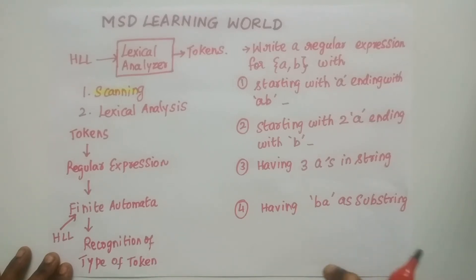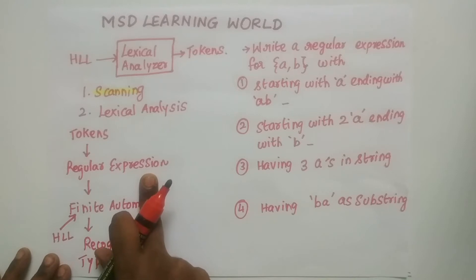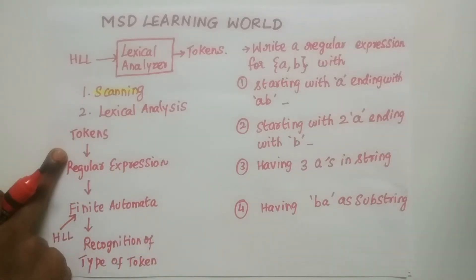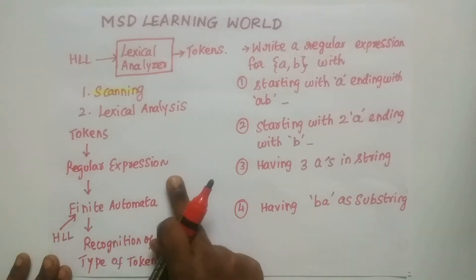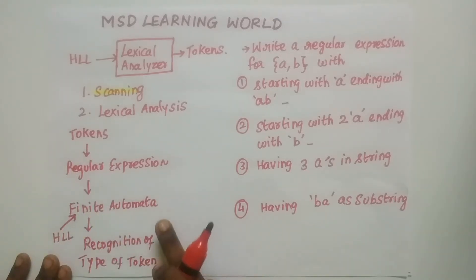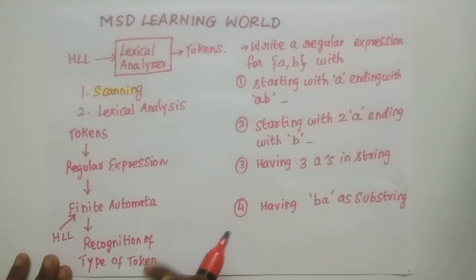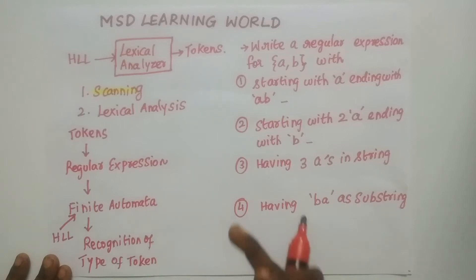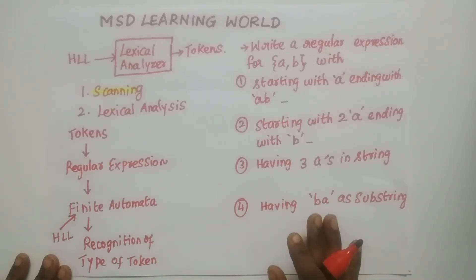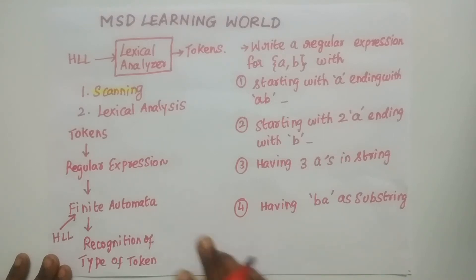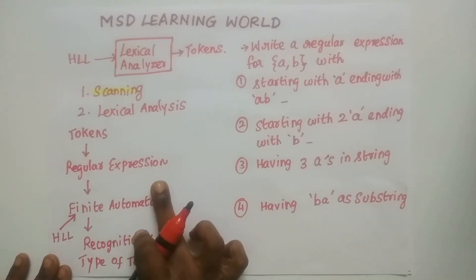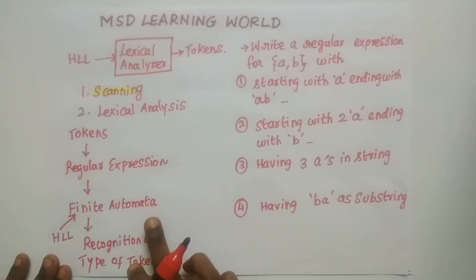To create the finite automata, we must have knowledge of regular expressions, because the input given to the finite automata is the regular expression. For each token from the high level language, we create a regular expression which serves as input to the finite automata. Once we have finite automata for all tokens, the lexical analyzer checks input tokens and finds their type. In this video, we will see how to create regular expressions and finite automata for all possible tokens.